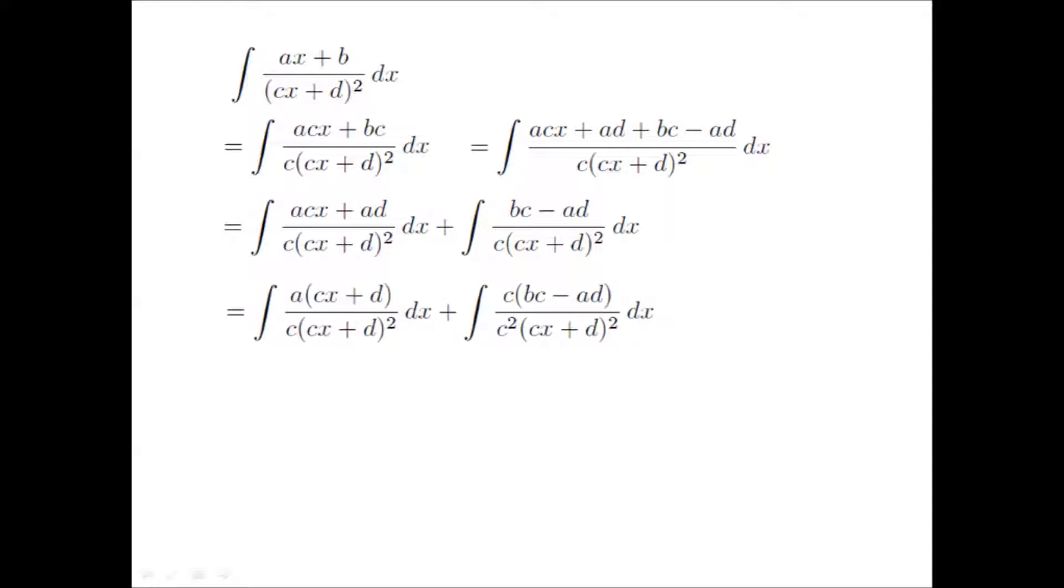Now in the first fraction, let's take common factor a out. We get a times cx plus d. In the second fraction, multiply numerator and denominator by c.